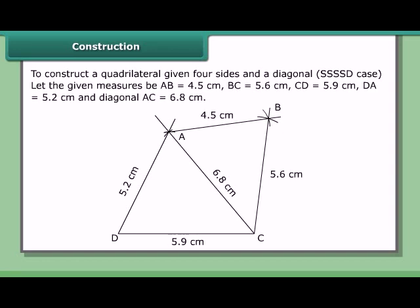The two triangles we can construct to complete the quadrilateral are triangle ADC and triangle ABC.